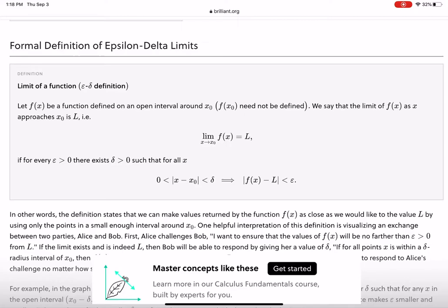Let f of x be a function defined in an open interval around x sub naught. f of x sub naught does not have to be defined. We say that the limit of f of x as x approaches x sub naught is L if, for every epsilon greater than 0, there exists a delta greater than 0, such that for all x, the absolute value of the difference between x sub naught and x is less than delta, implies that the absolute value of the difference between f of x and the limit is less than epsilon. Totally clear, right?